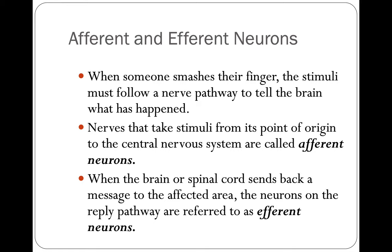When someone smashes their finger, the stimuli must follow a nerve pathway to tell the brain what has happened. Nerves that take stimuli from its point of origin to the central nervous system are called afferent neurons — the information comes in through afferent neurons. When the brain or spinal cord sends back the message to the affected area, the neurons on the reply pathway are referred to as efferent neurons. So afferent carries information into the brain, and efferent sends the message back to the affected area.